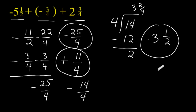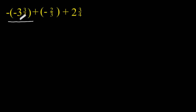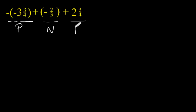Now let's try another example. Notice that this first term starts off with a minus and then a negative. When you see two consecutive negatives, we have to remember to consider that number a positive value. So we are going to consider 3 and 3 quarters as a positive value, 2 thirds as a negative value, and 2 and 3 quarters as a positive value.